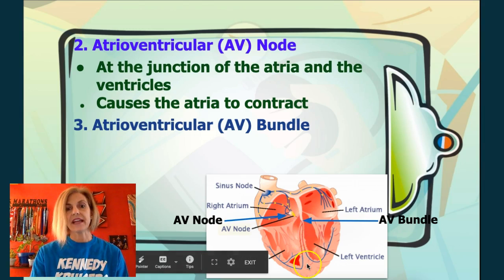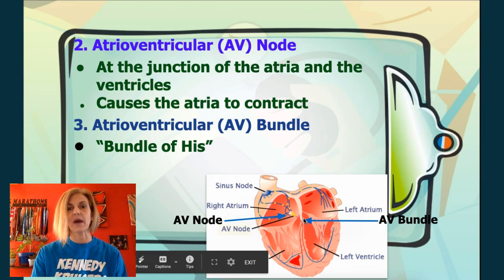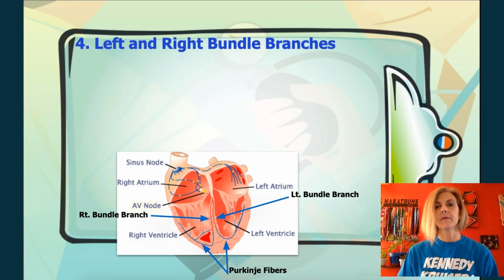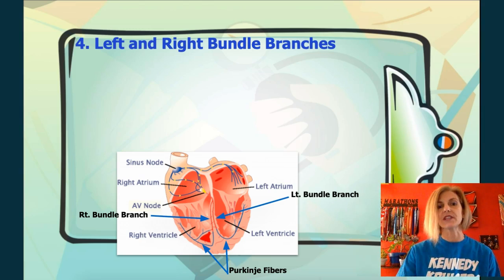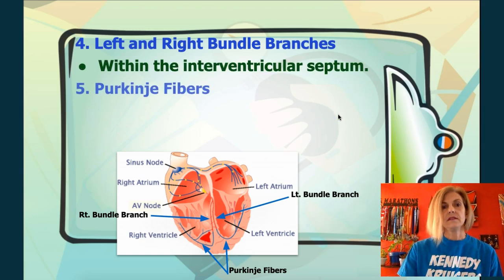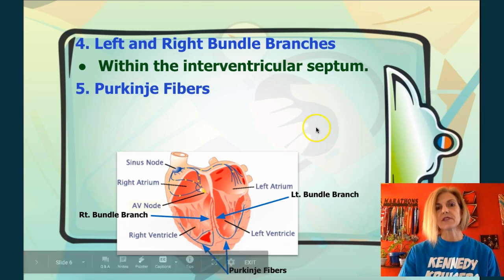This dividing line is the AV bundle, also called the bundle of His. The action potential moves from the AV node to the AV bundle, through the bundle of His to the bundle branches — one on both the right and left side of the septum. This takes the signal down into the ventricular area, to the Purkinje fibers around the bottom of the heart at the apex and around the margin.